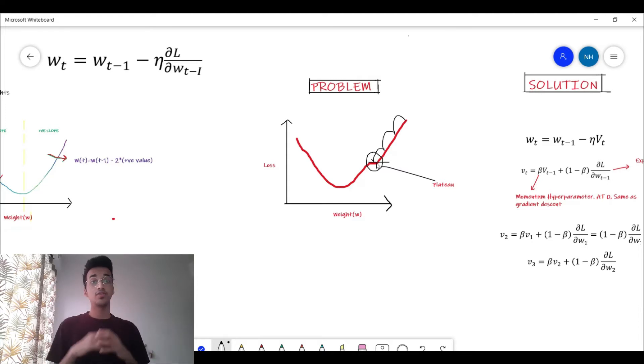That is where momentum comes in. In physics, momentum is equal to mass into velocity. Physically, when you're descending down a slope, if a car is coming down a slope you say that it's gathering more momentum.